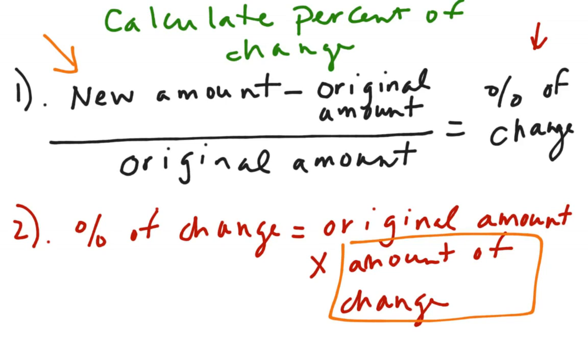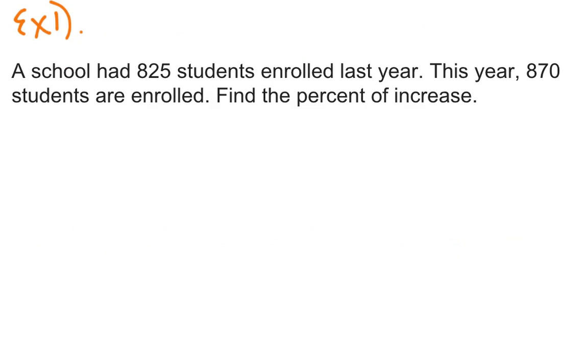We'll probably use both of them depending on our situation. Some example problems. Example one. A school has 825 students enrolled last year. So that's your original amount last year. This year, 870 students are enrolled. Find the percent of increase. So you can see that last year we had 825. This year we have 870. So it went up from last year to this year. So that's going to make it an increase, even though they specifically said find the increase. Sometimes they don't tell you that. They say find the change. We can tell it's an increase.